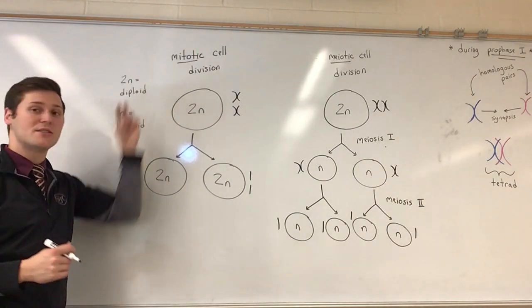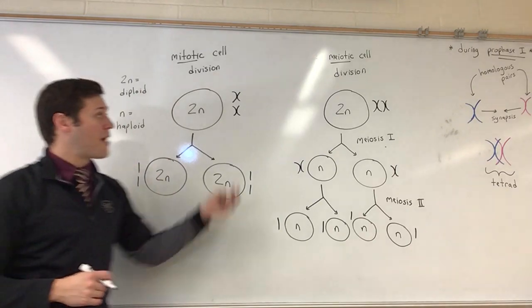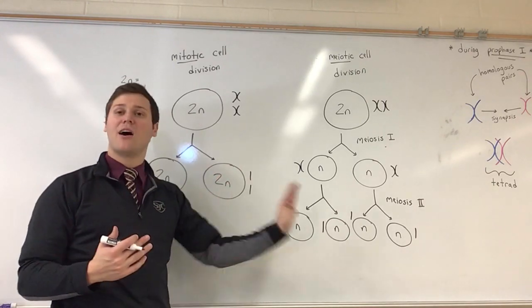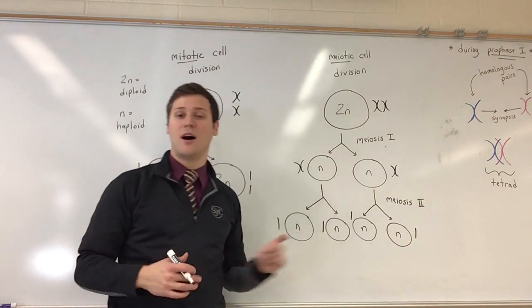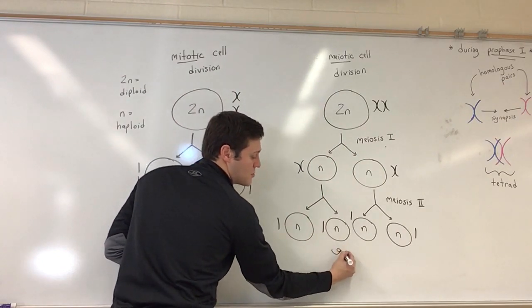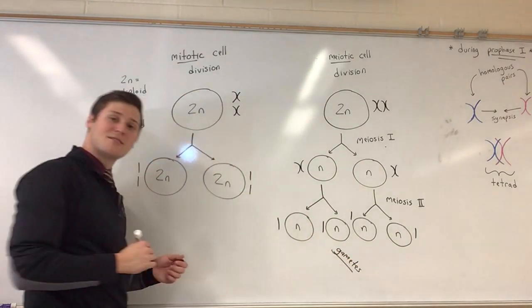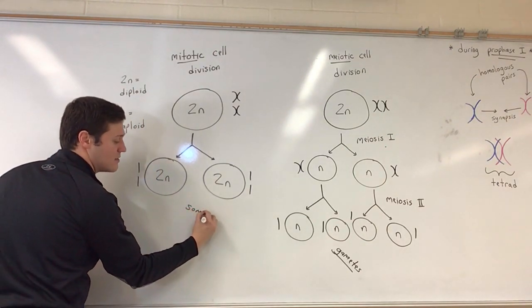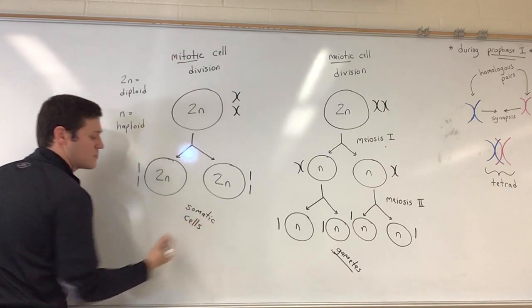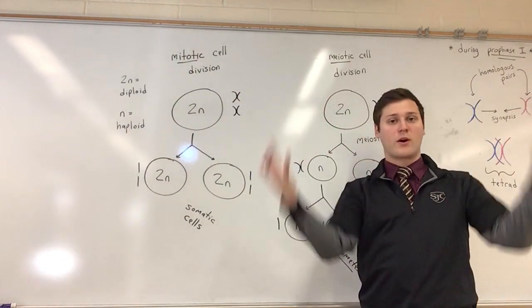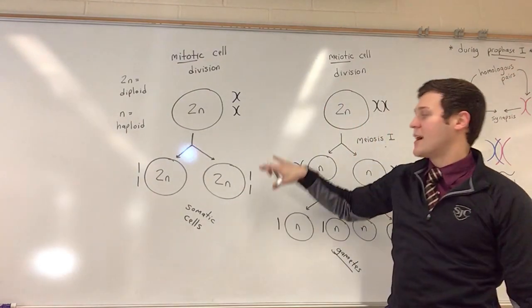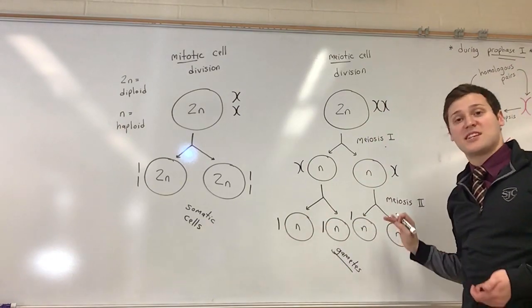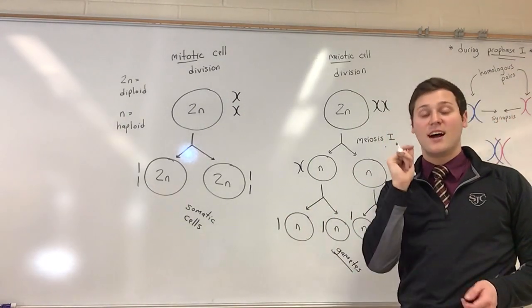By the end of mitosis we have two genetically identical daughter cells. By the end of meiosis our resulting cells are haploid and genetically different. Meiosis is used to produce gametes or sex cells like sperm and egg cells, whereas mitosis is used for everything else — all other cells of the body. Quick recap: mitosis starts diploid and ends diploid with identical somatic cells; meiosis starts diploid and ends haploid with four genetically distinct cells.